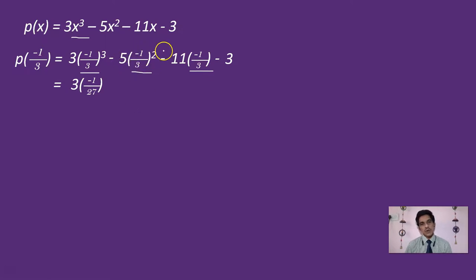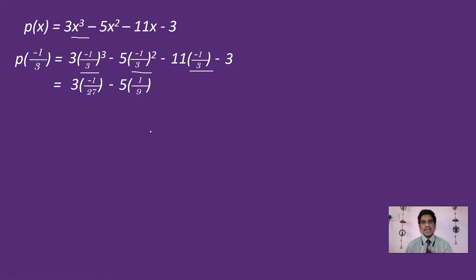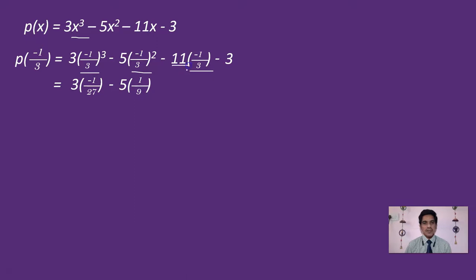Simplifying: (-1/3)² = 1/9, so -5 of 1/9 = -5/9. For -11 × (-1/3): minus of minus is plus, giving +11/3. The constant is -3. So we have 3×(-1/27) - 5/9 + 11/3 - 3, which simplifies to -1/9 - 5/9 + 11/3 - 3.